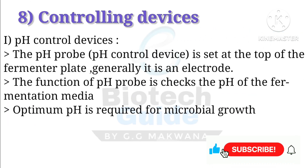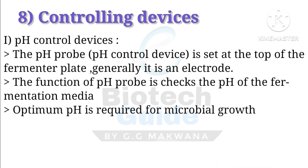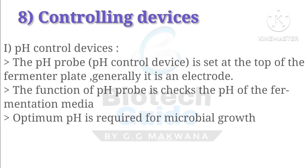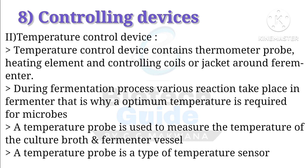The last section covers controlling devices. The pH control device: the pH probe is set at the top of the fermenter plate; it is generally an electrode, and its function is to check the pH of the fermentation media. The second is the temperature control device, which contains a thermometer probe, heating element, and controlling coils, as well as a jacket around the fermenter.